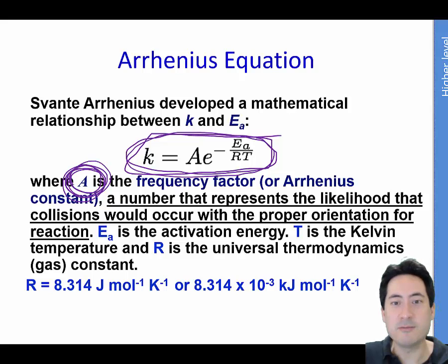What you need to know is that the Arrhenius constant represents the likelihood that collisions would occur at the proper orientation for a reaction. So by them deriving this equation for us, we know the temperature, we know the gas constant and that's the natural log. This is worked out for us by the physicists.